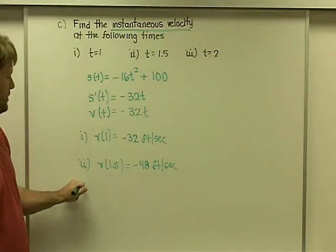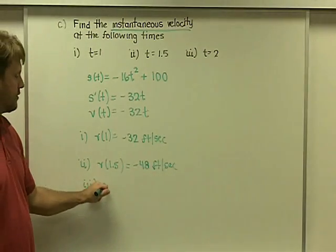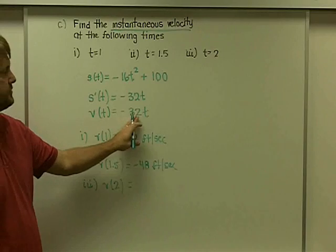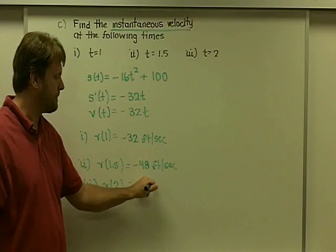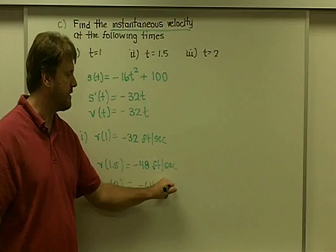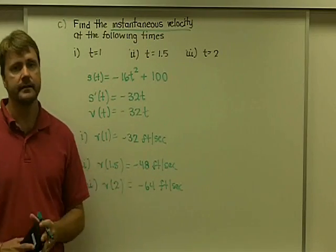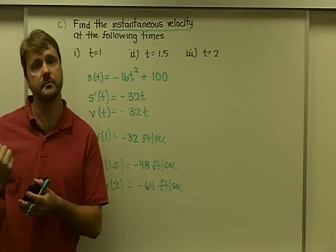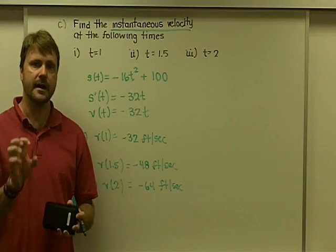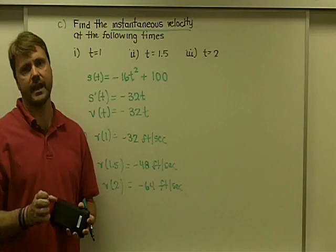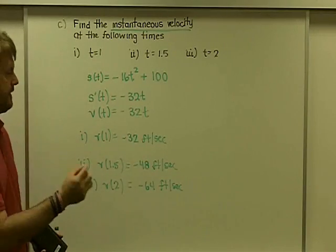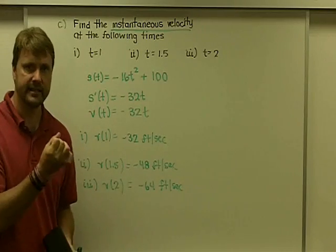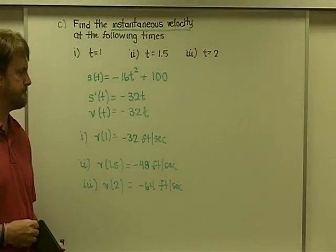And then, finally, at time 2, we would say, okay, the velocity at time 2 would be negative 32 times 2, which in this case is negative 64 feet per second. Now, of course, you can try to compare the results with part C with part A, but you've got to keep in mind that part A was giving you an average of velocity over a time interval. These are probably a little bit more powerful because it's an exact instantaneous velocity at a specific time.